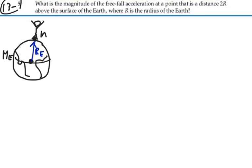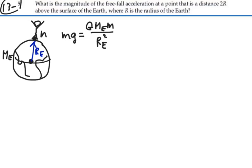You would describe your weight, mg, as being equal to the gravitational attraction between you and the Earth: big G, times the mass of the Earth, times your mass, over the distance between you squared — which is the radius of the Earth squared — because we treat the mass of the Earth as being located at the center of the Earth.